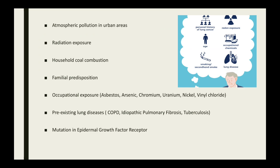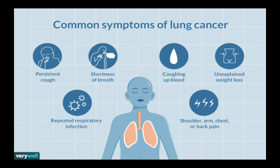Occupational exposure to asbestos, arsenic, chromium, uranium, nickel, and vinyl chloride can all cause lung carcinoma. Pre-existing lung diseases such as COPD, idiopathic pulmonary fibrosis, and tuberculosis can also predispose to lung carcinoma. A few studies showed that mutation in epidermal growth factor receptor can also lead to lung carcinoma.